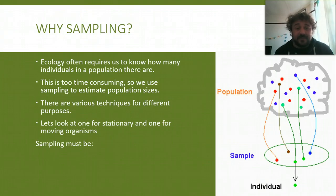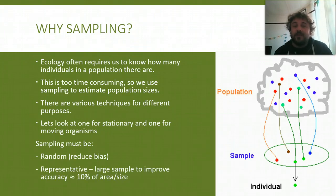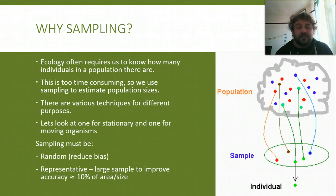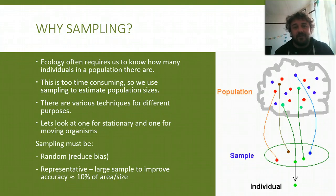Sampling must have these two characteristics. It must be random — this reduces the bias, and this is really, really important in all science. And it must be representative, so you need a large enough sample to improve the accuracy. You want roughly 10% of the population, as close as you can get to 10% anyway, and you want at least 10% of the area covered.